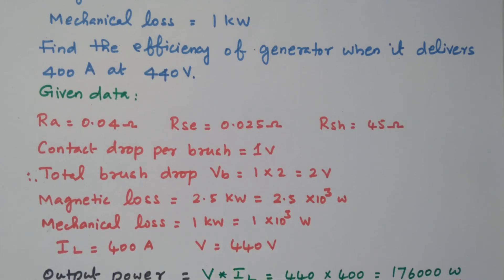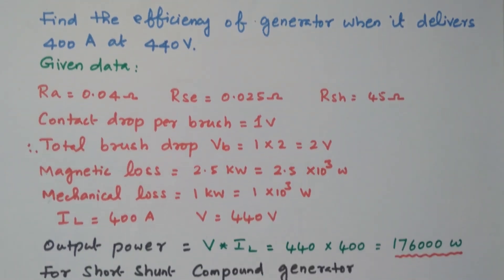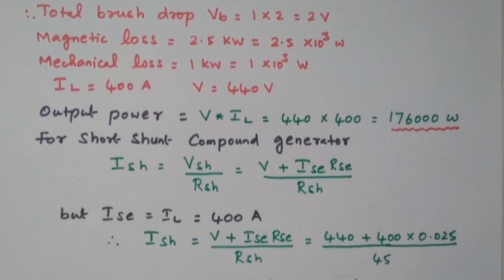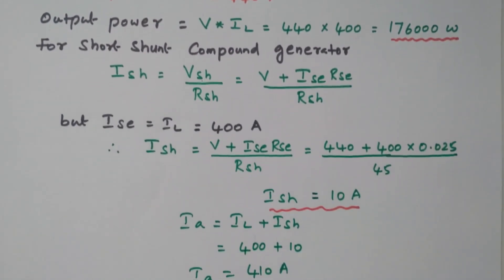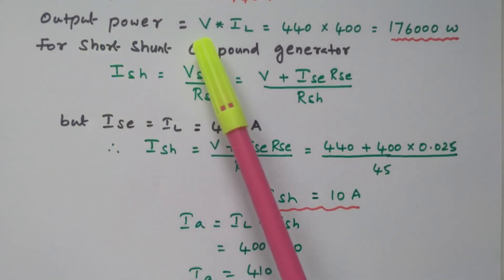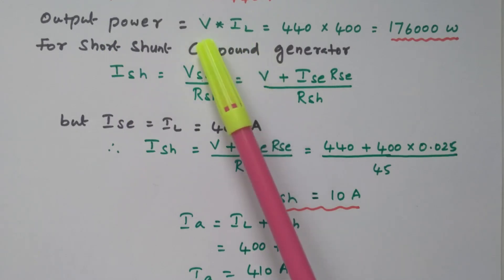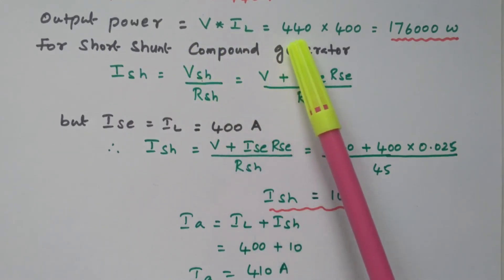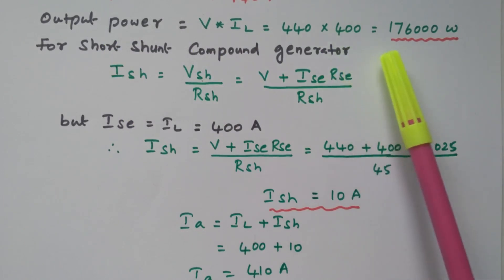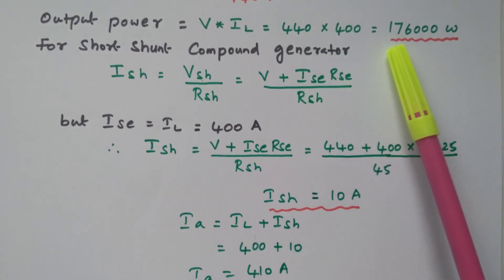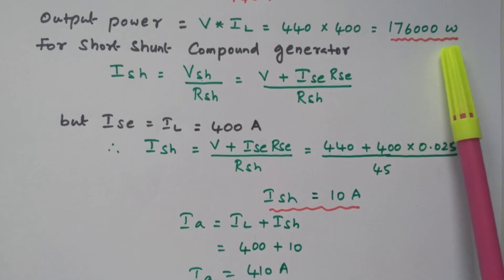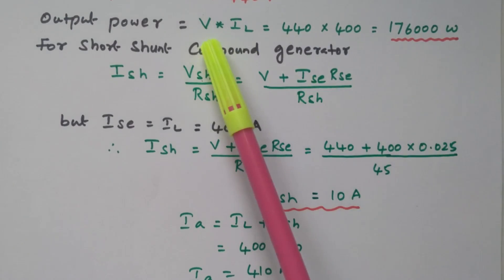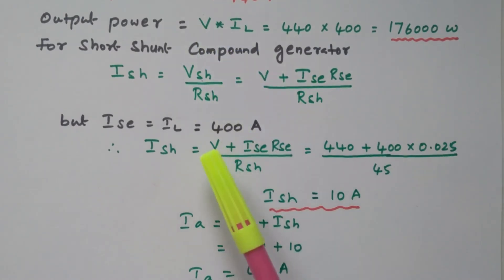Our final aim is to find the efficiency. First we will find the output power of this generator. Output power can be calculated from terminal voltage and load current: 440 volts into 400 ampere equals 176,000 watts. So 176,000 watts is the power output, calculated from terminal voltage and load current.